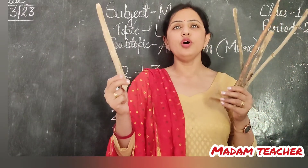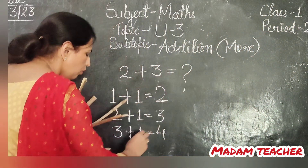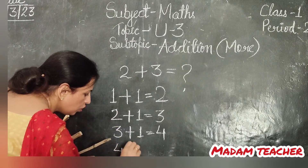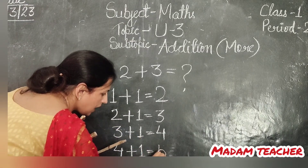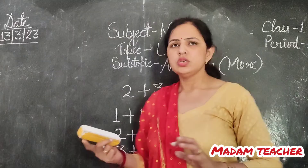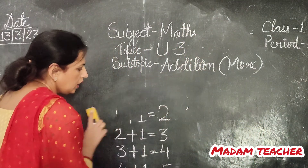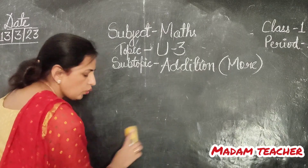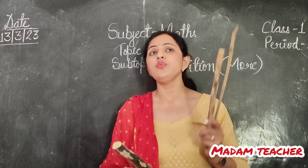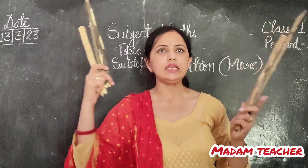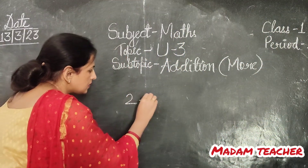Again, 4 plus 1 — 4 mein 1 more add. So it is now 5. Now we understood. My question was: what will come when we add 2 and 3? 2 plus 3.